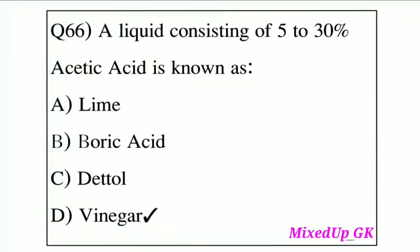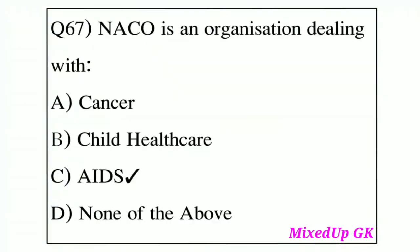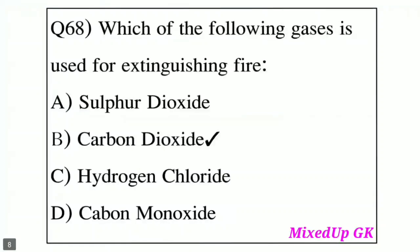Question number 67: NACO is an organization dealing with what? Option A: Cancer. Option B: Child Health Care. Option C: AIDS. Option D: None of the above. The answer is Option C, AIDS. NACO deals with AIDS.